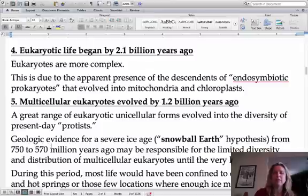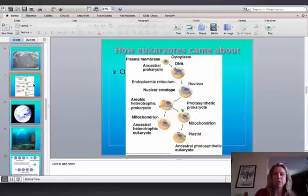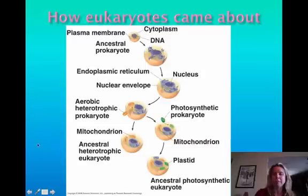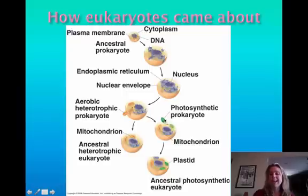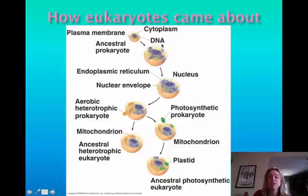Then about 2.1 billion years ago is when eukaryotes came to be. The way they think that happened is through a process called endosymbiosis — 'endo' means within, 'symbiosis' means living together. Literally, what they think happened is that you had an original ancestral bacterial cell, and then another bacterial cell started living within it — that's how we got a lot of our organelles. Chloroplasts and mitochondria are thought to have come about this way. For membrane-based organelles like the ER and Golgi apparatus, they think the cell just folded in on itself.